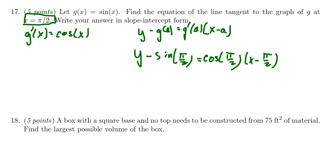Now, sin(π/2) = 1 and cos(π/2) = 0, so this simplifies to y - 1 = 0, or y = 1. It turns out that the tangent line is actually horizontal at this location, so our equation is y = 1.